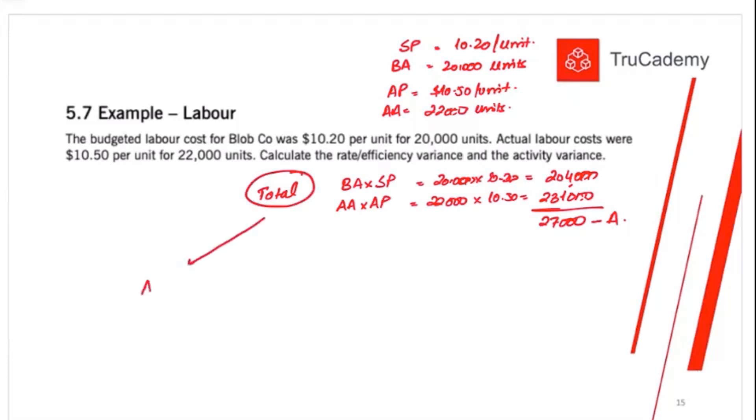Now let's see the activity and the price variance. Price means cost variance.